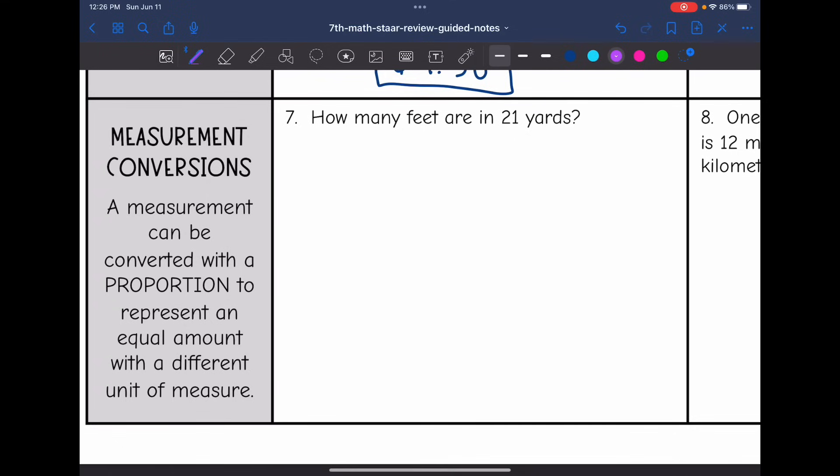Last thing that we are going to do is measurement conversion. So a measurement can be converted with a proportion to represent an equal amount with a different unit of measure. So we're going to do the same thing we've been doing. Set up a proportion and solve it by finding the relationship or using cross multiplication.